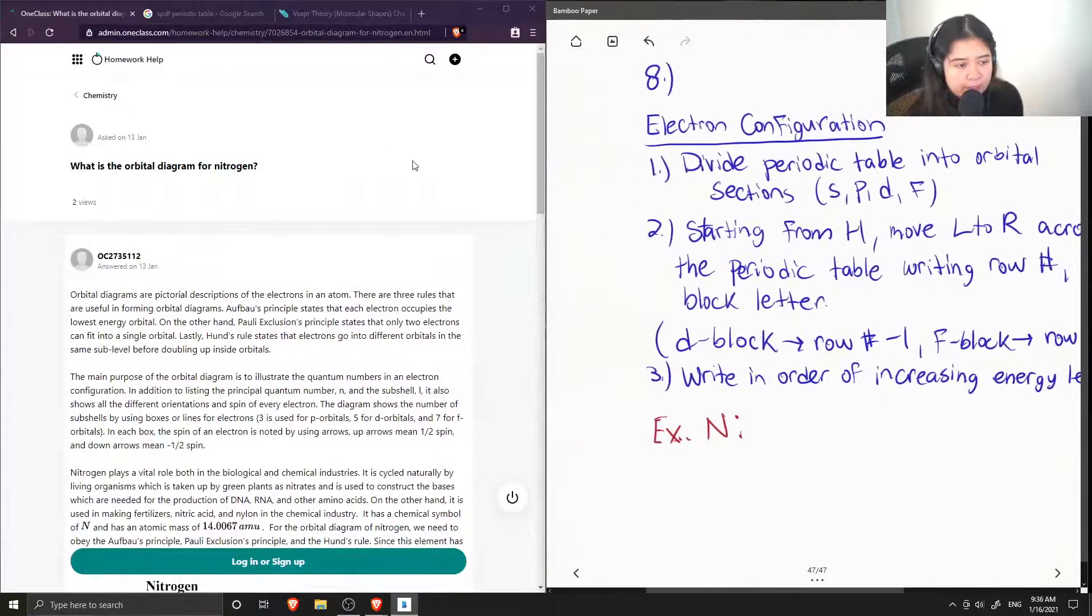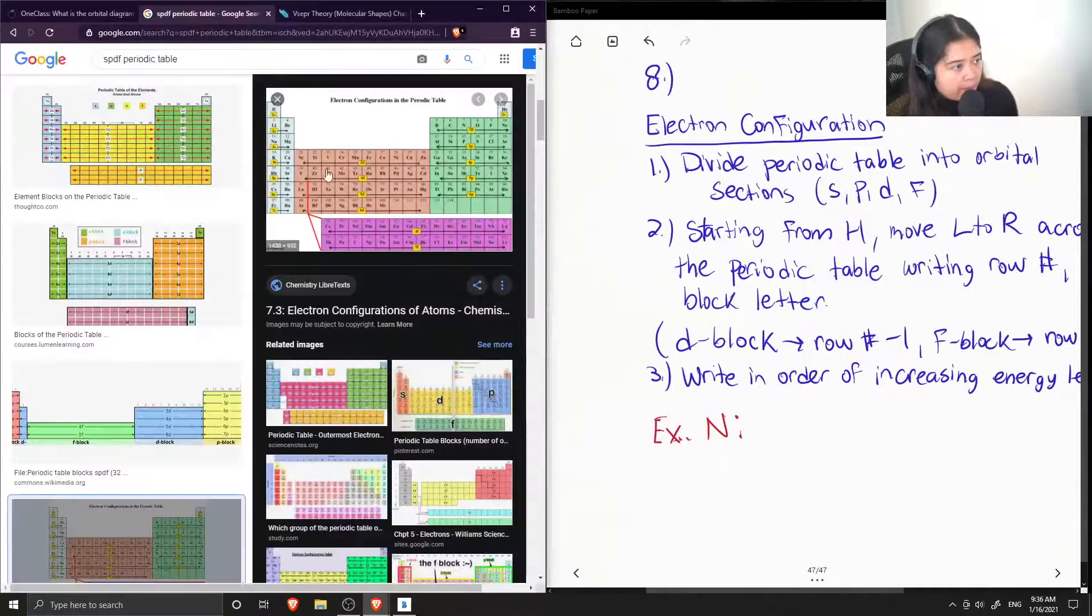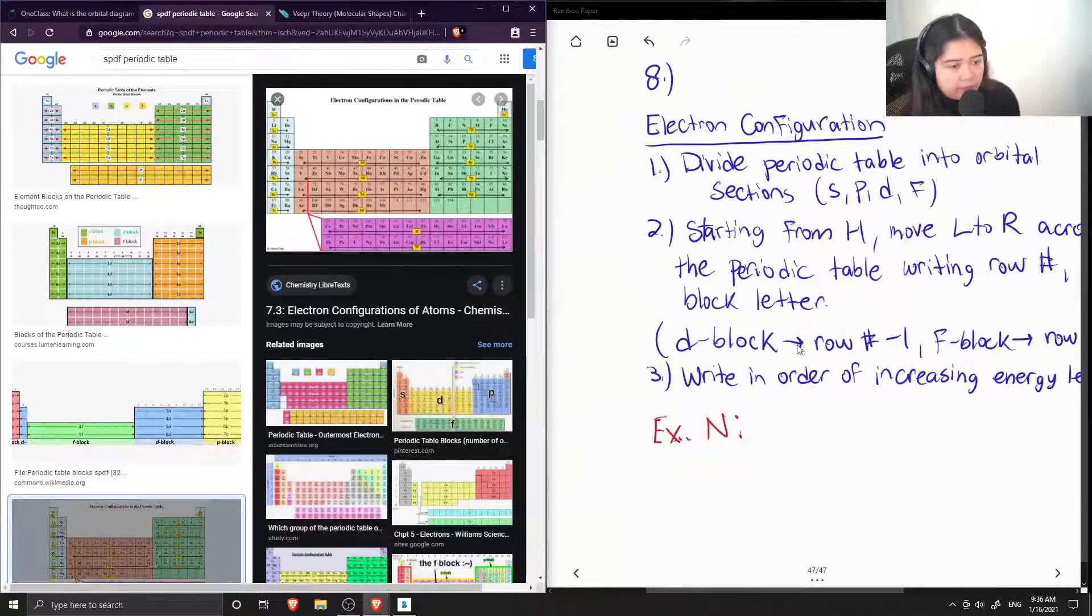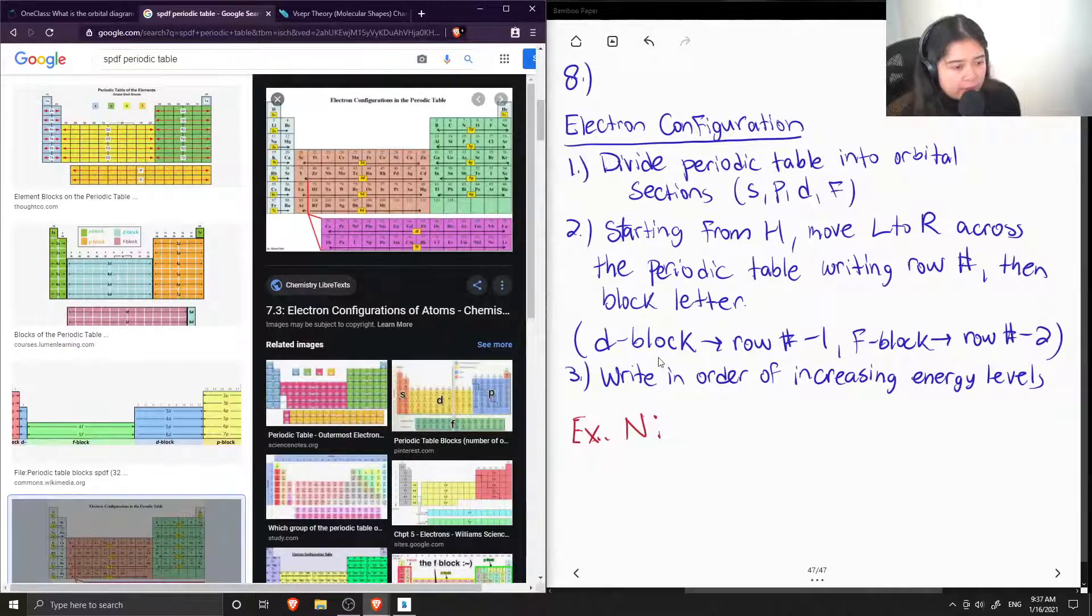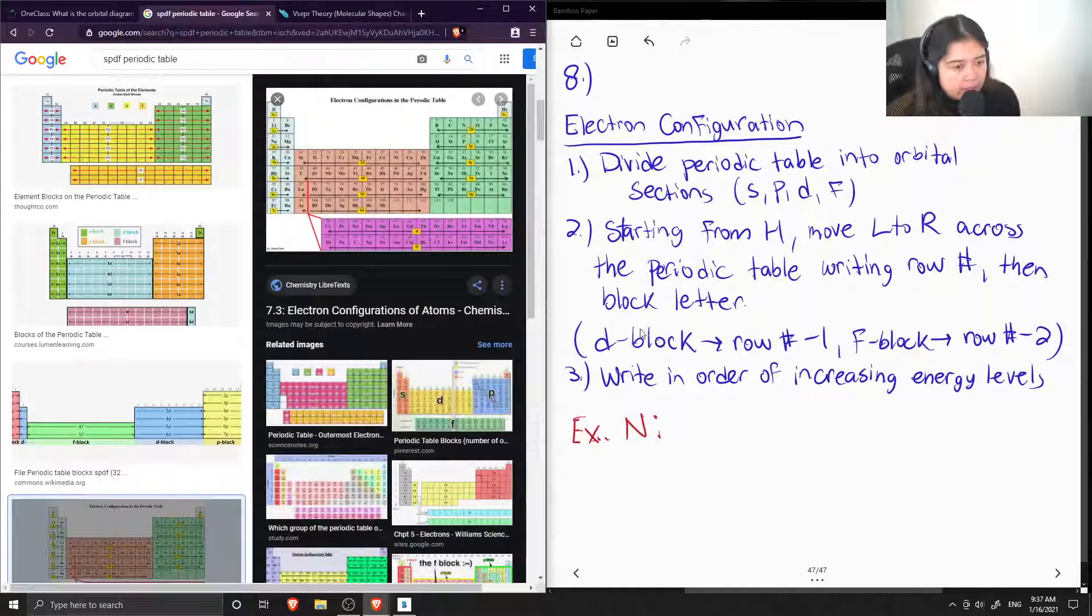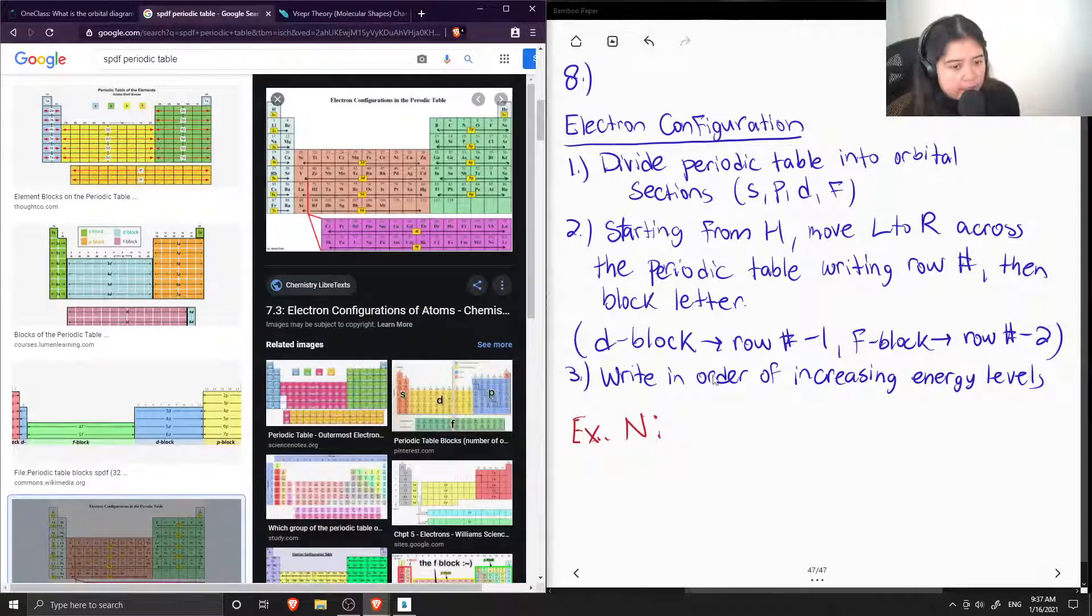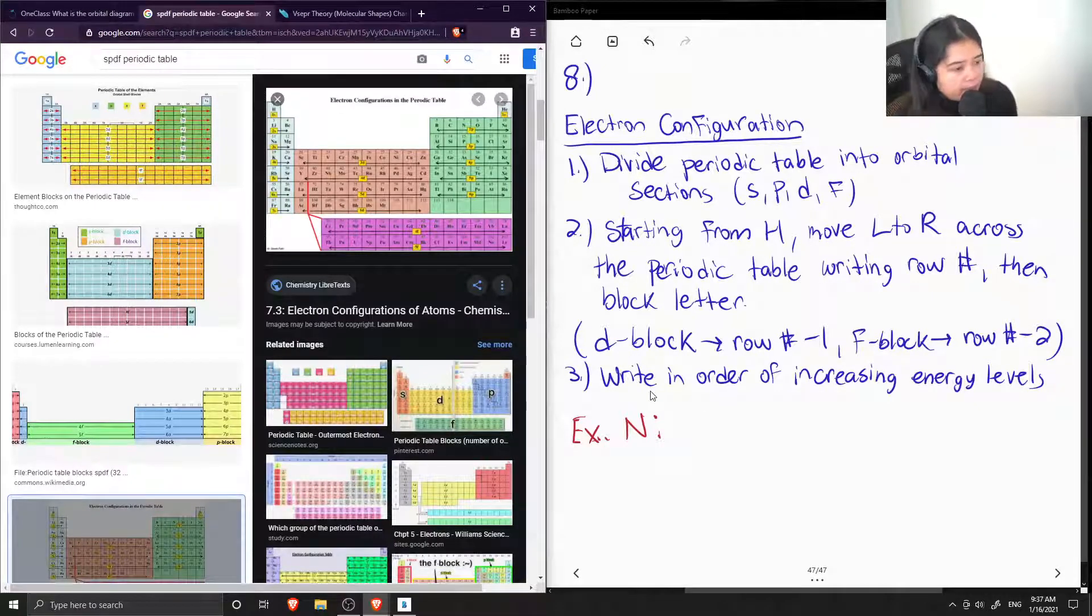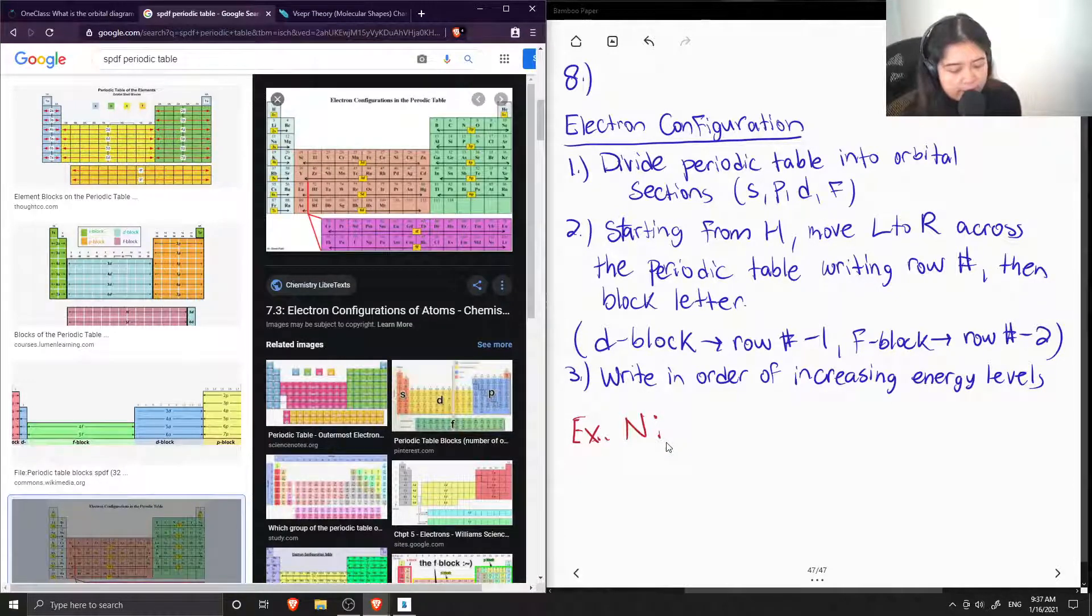Once we get to the D block, which is shown here, the transition metals, we write the row number minus 1. And once you get to the F block, it's the row number minus 2 and then the block letter. And then it's also important to know that we write in order of increasing energy levels.